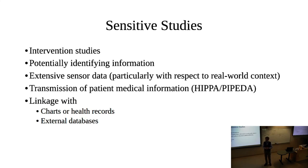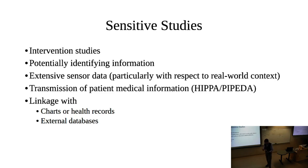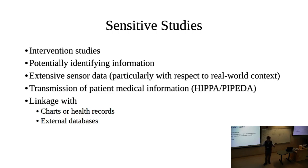Another question that comes up is encryption. How is data stored on the phone? How is the data transmitted from the phone to Ethica servers? And once on the servers, where is it physically located, and how is it protected? Mohamed could comment on the encryption side of this, but it's encrypted on the device and encrypted in transit, which generally makes ethics boards more comfortable. If the phone is stolen, the data will be gibberish to someone who breaks in and tries to look at it.